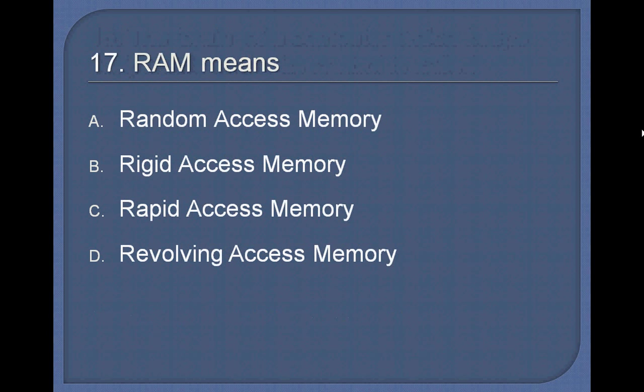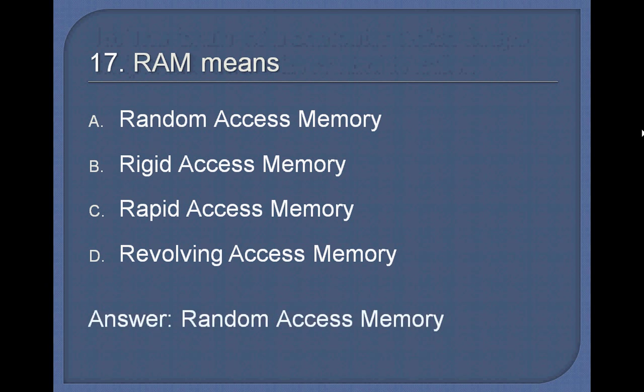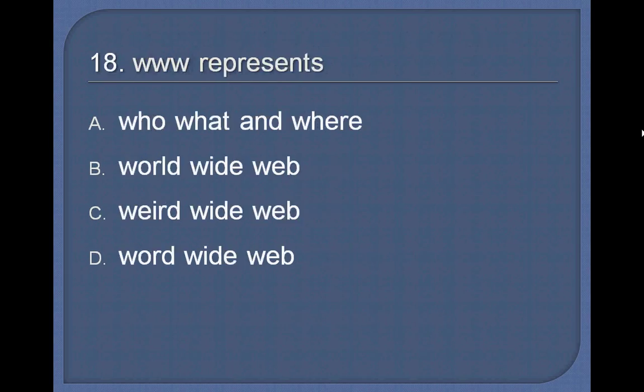Question 17. RAM means: Random Access Memory, Bridget Access Memory, Rapid Access Memory, or Revolving Access Memory? Answer: Random Access Memory.